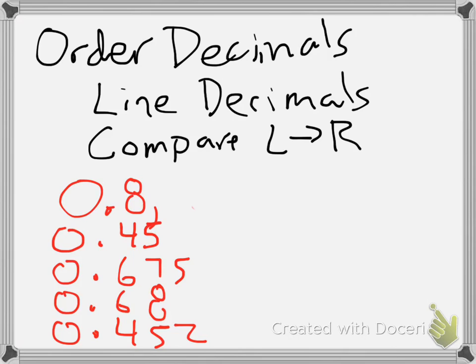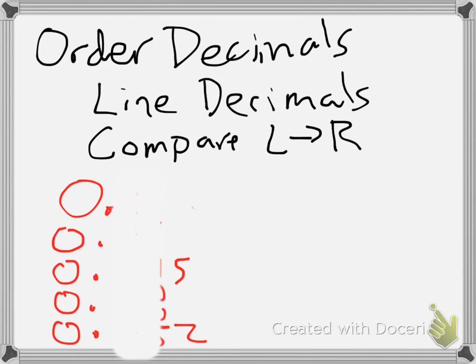What I like to do is cover up everything using a piece of paper to help me focus on just what I'm supposed to be looking at. I'm going to start by covering up everything except those left numbers. Right now I can notice that everything there is the same — I've got 0, 0, 0, 0, 0. Those are all the same.